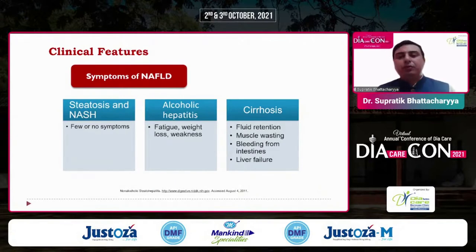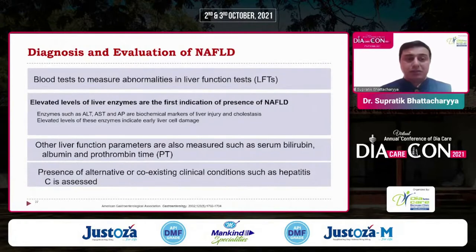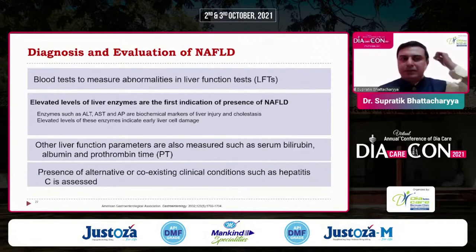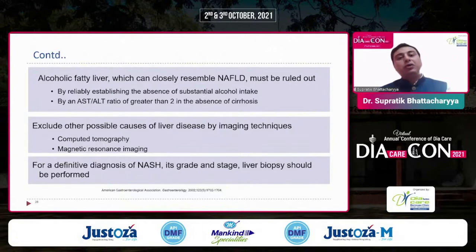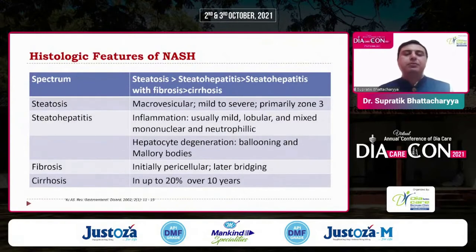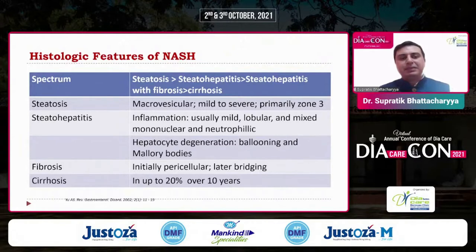When patients have full-blown cirrhosis, they can have fluid retention, muscle wasting, and bleeding. For diagnosis and evaluation of NAFLD, biochemical parameters are very important — we look at liver enzymes and need to rule out alcoholic fatty liver, which can closely resemble NAFLD. Histological features of NASH include different stages starting from steatosis, steatohepatitis, fibrosis, and cirrhosis.